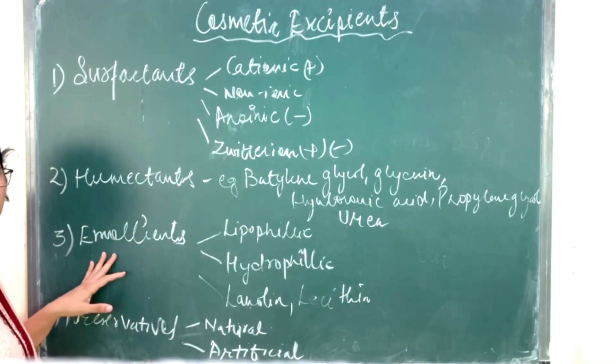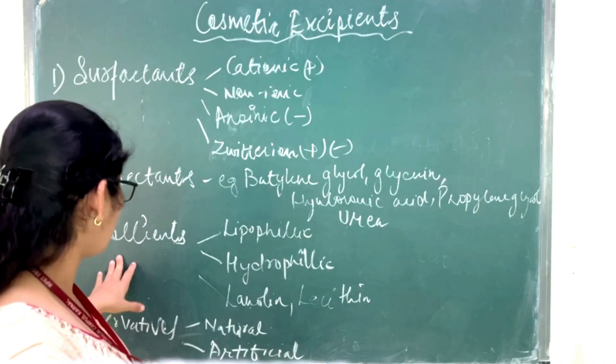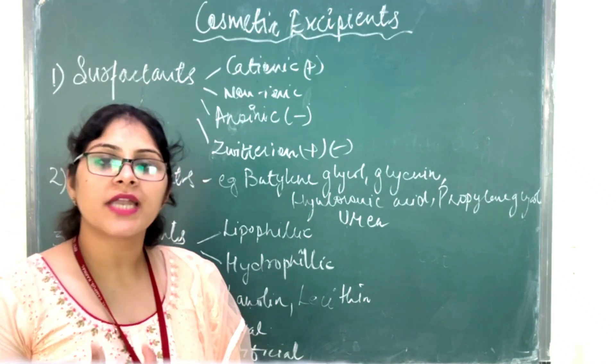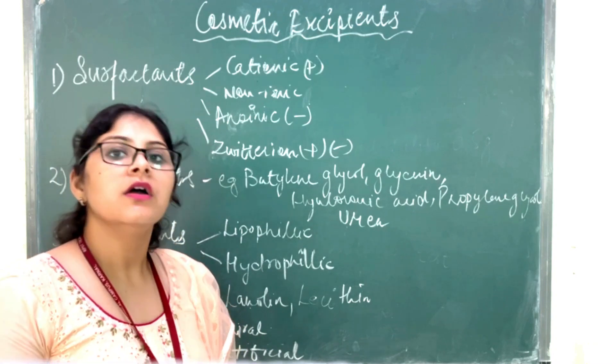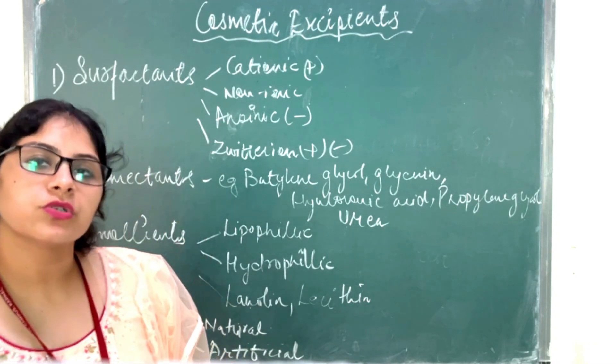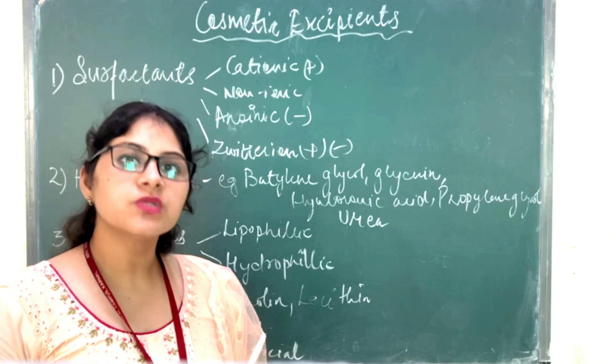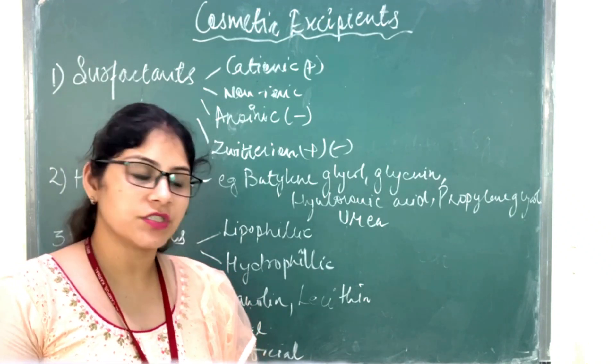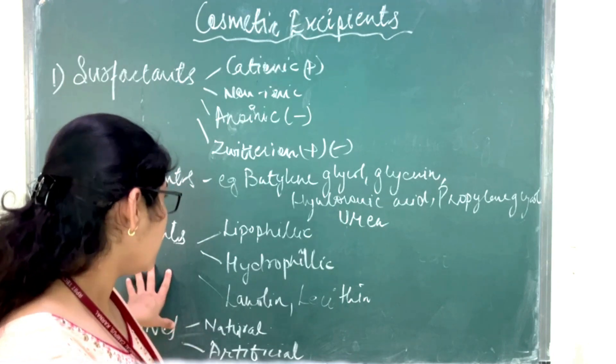Then comes the emollients. What are emollients? Emollients are the substances which provide smooth texture, protecting layer, lubrication to the formulation. In cream or lotion, we want the smooth texture and smooth, thin layer of that preparation. So emollients are added.